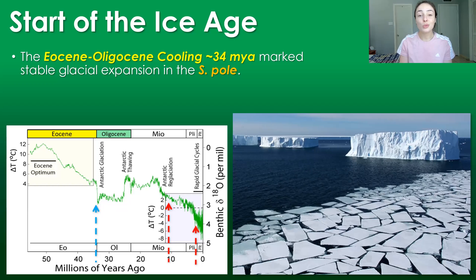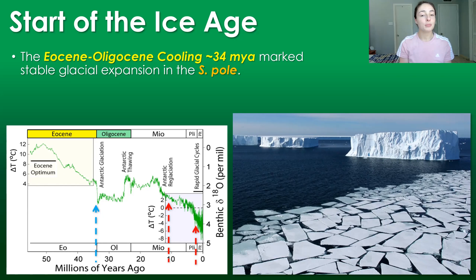Hey everyone. It might not seem like it, but we're actually in an ice age that started around 34 million years ago. So let's talk about it. The cooling event that kicked off the modern ice age is the Eocene-Oligocene cooling that happened around 34 million years ago, as we can see in the graph to the bottom left,